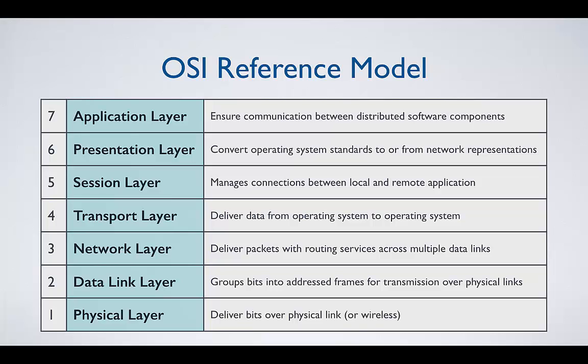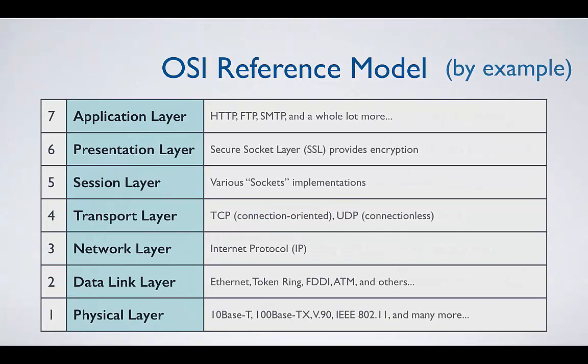So that's a brief overview of the functionality of the different layers of the OSI model. Let's take a quick look at the protocols that each of these layers use, focusing on the protocols we will be using to build our internet software applications. Going from the bottom up: at the physical layer, we've got our Ethernet cable protocols — 10BaseT and 100BaseTX. V90 is a modem protocol. We've got wireless protocols here, and many more.